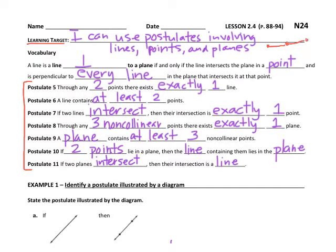We also had a postulate that said we could add two angles together — it was called the angle addition postulate. A postulate is a statement that we believe to be true without any proof. We're just going to believe these statements are true and use them for work with different diagrams.